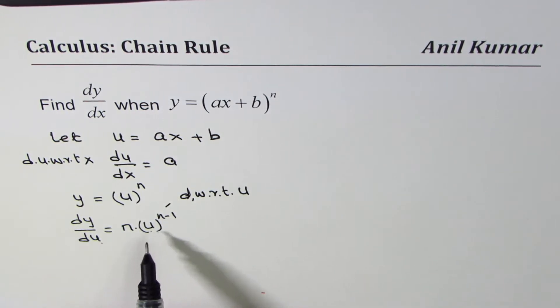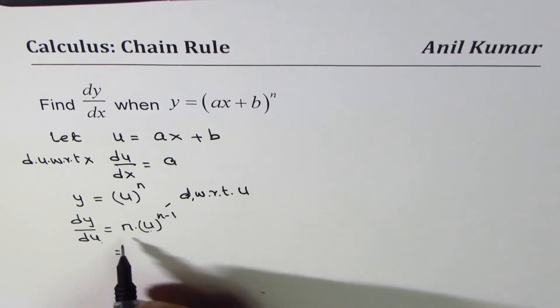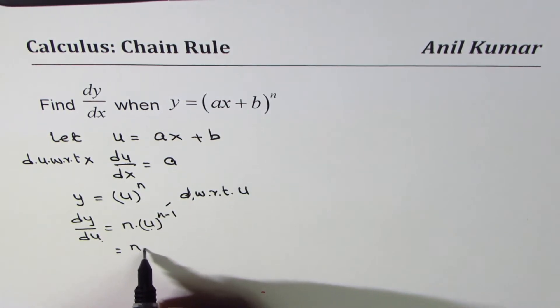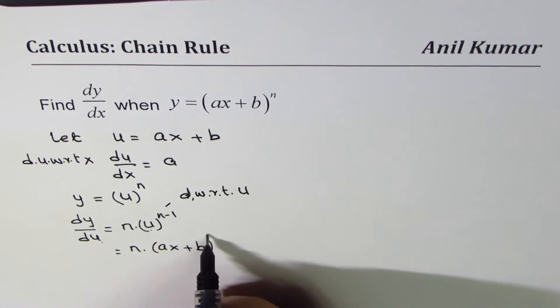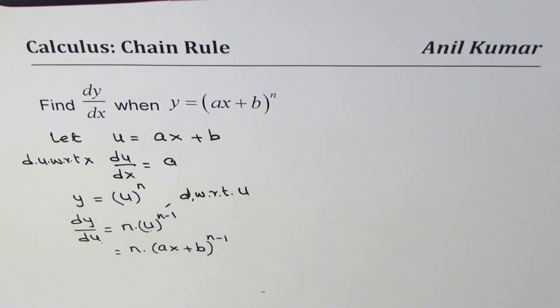Since we know that u is ax plus b, we can replace u by ax plus b. So we could write this as n times ax plus b to the power of n minus 1. So we get dy/du in terms of x.